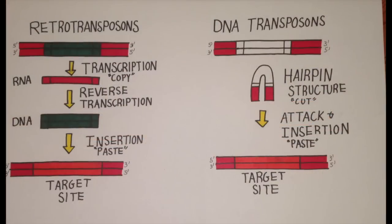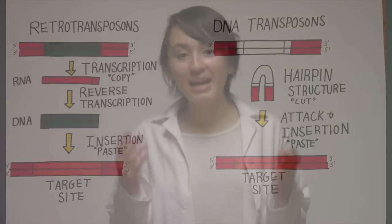In summary, the retrotransposon is copied and pasted into the target site through the processes of transcription and reverse transcription. The DNA transposon is cut and pasted into the target site by being changed into the hairpin structure. Now can it be any easier or sweeter?